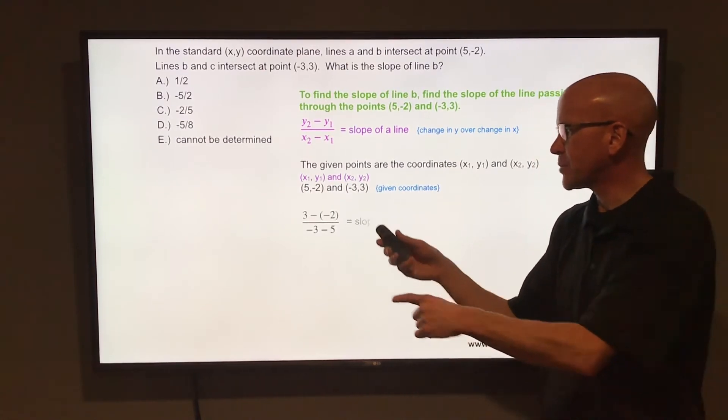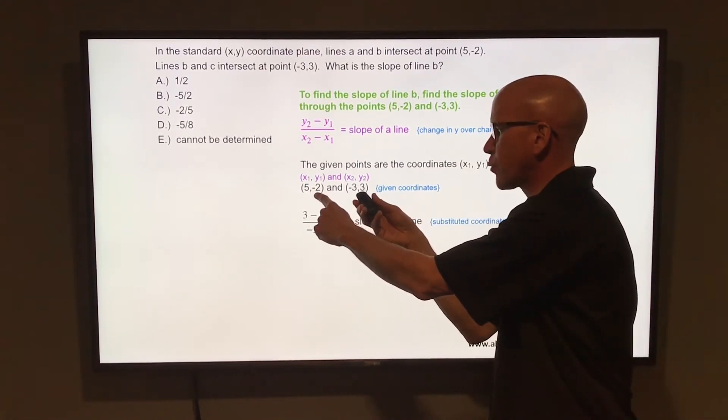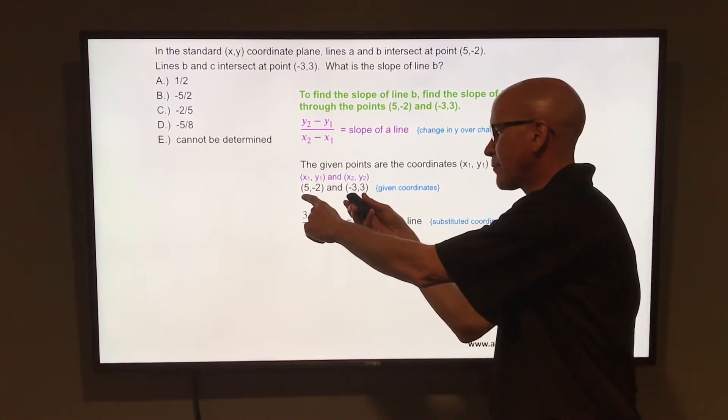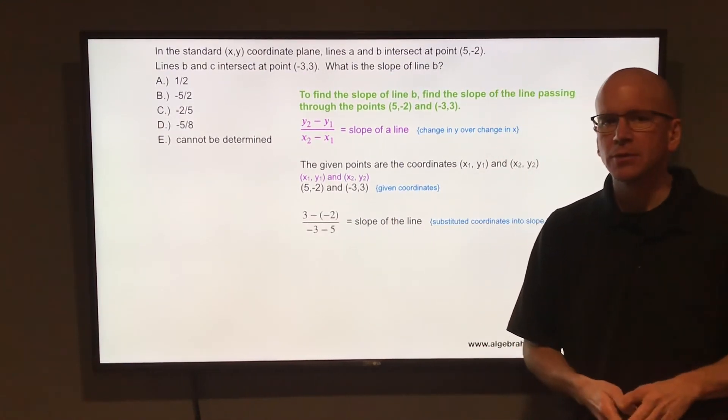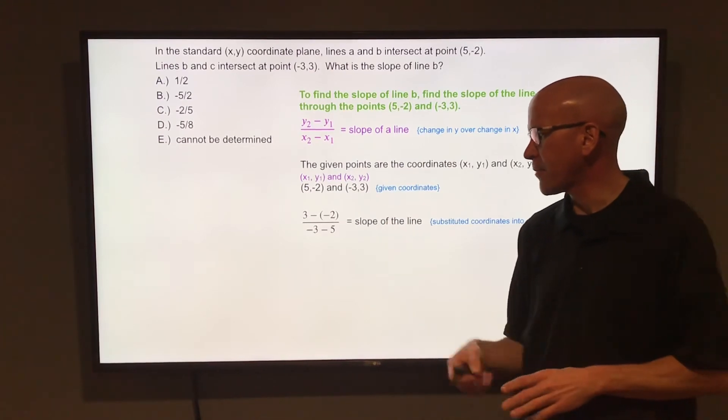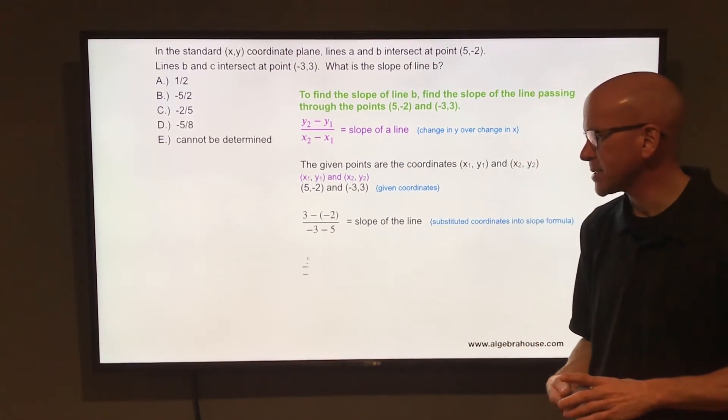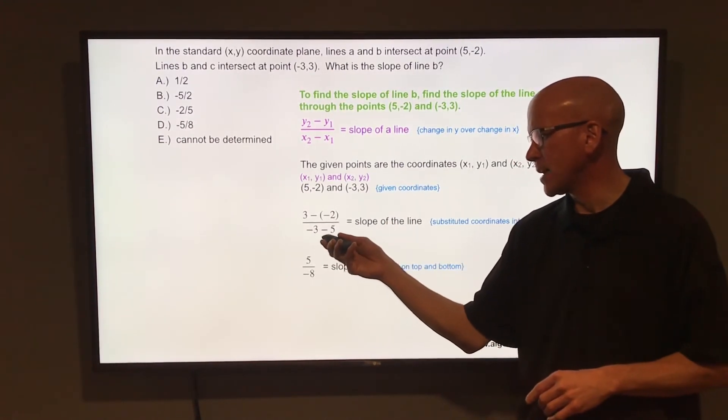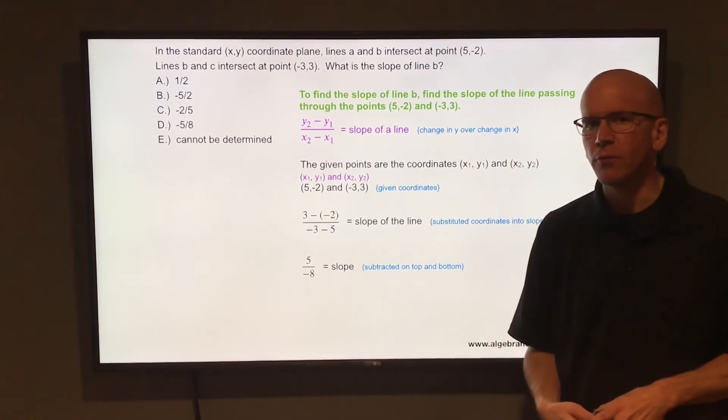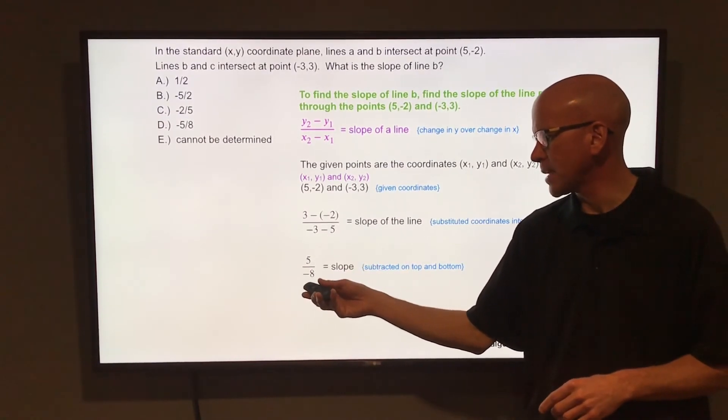Or just think change in y over change in x. You're taking 3 minus the negative 2 over negative 3 minus 5. Vertical change over horizontal change. Simplify that. 3 minus negative 2 would be 3 plus 2, which is 5. Negative 3 minus 5 on the bottom, that is negative 8. So the vertical change is 5. The horizontal change is negative 8.